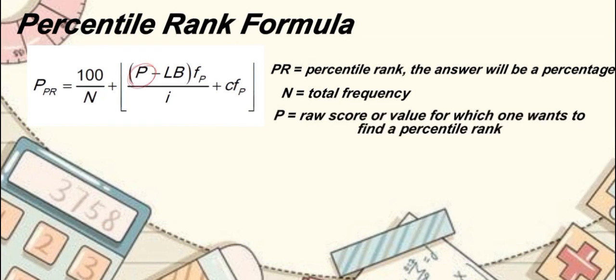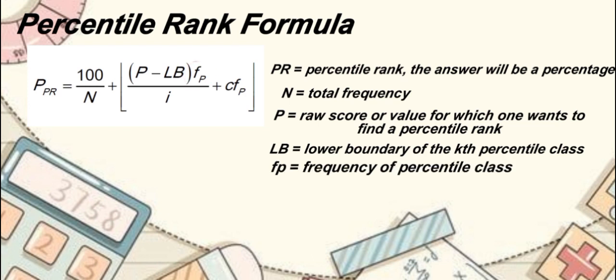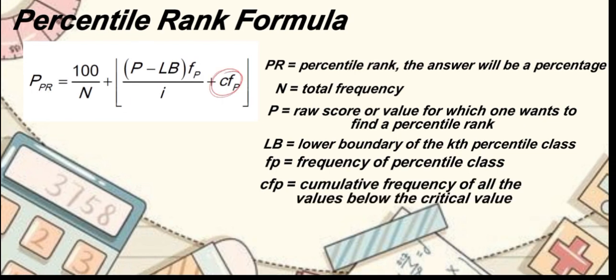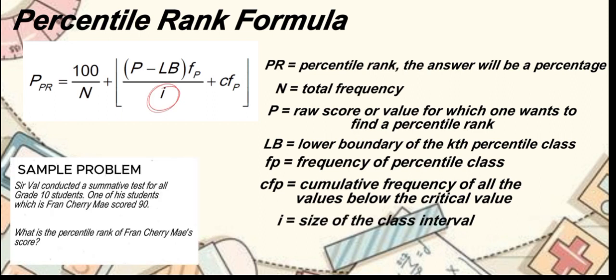P is the raw score or value for which one wants to find a percentile rank. LB is the lower boundary of the kth percentile class. FP is the frequency of percentile class. CFP is the cumulative frequency of all the values below the critical value, and I is the size of the class interval.